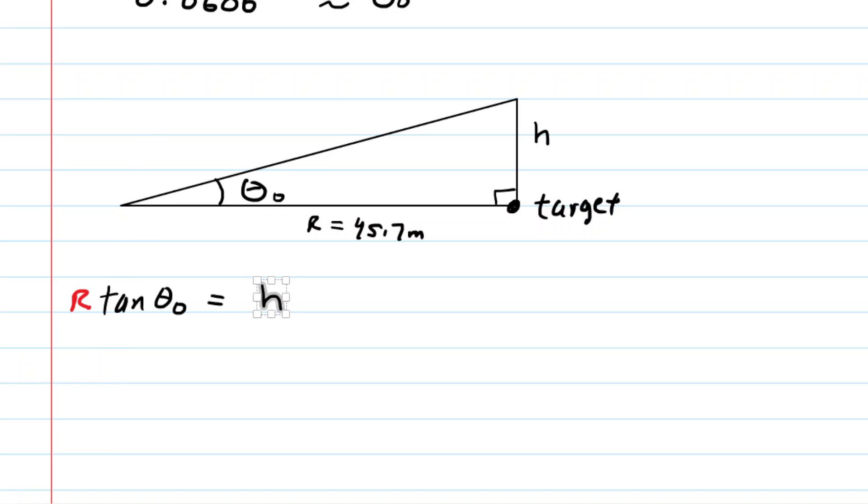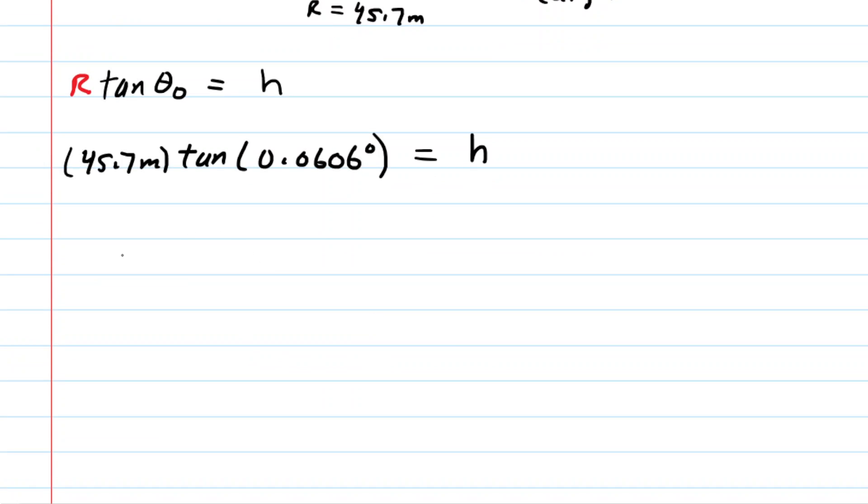We can go ahead and fill in the known data. And when you simplify the left side, you will get about 0.0484 meters for that height. If the homework system wants centimeters, you can just multiply the meters by 100, so basically move the decimal point twice to the right, and you would get an equivalent answer of 4.84 centimeters. That will be the height above the target that we must aim the rifle in order to hit the target.